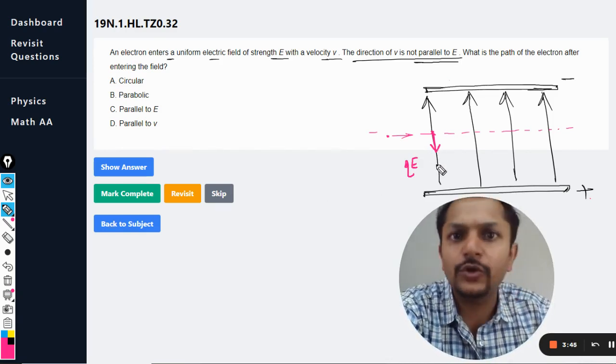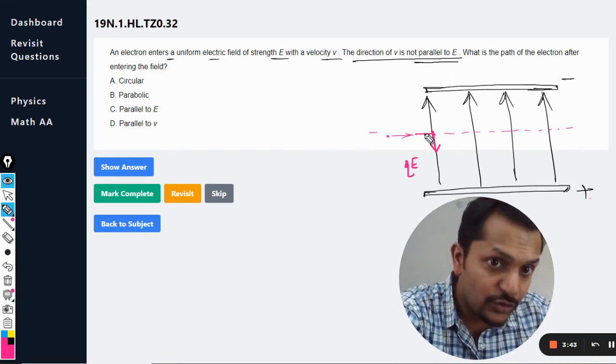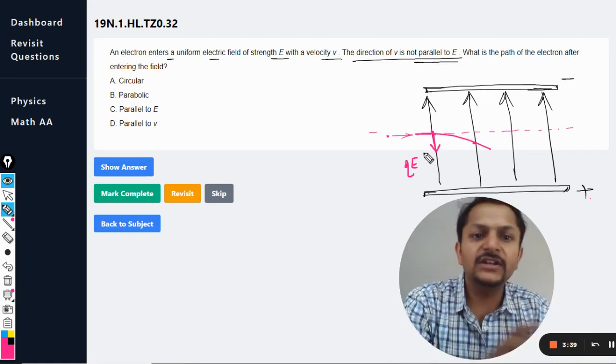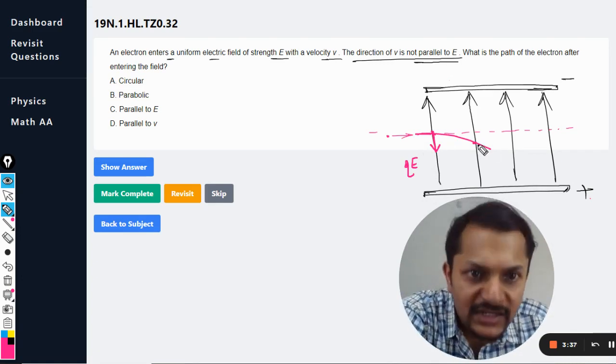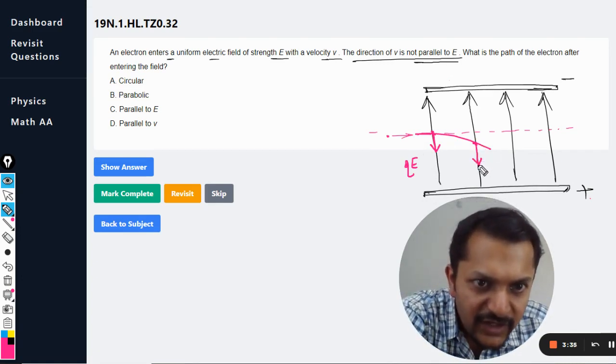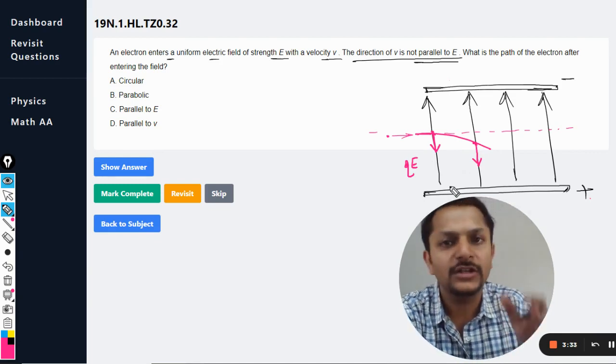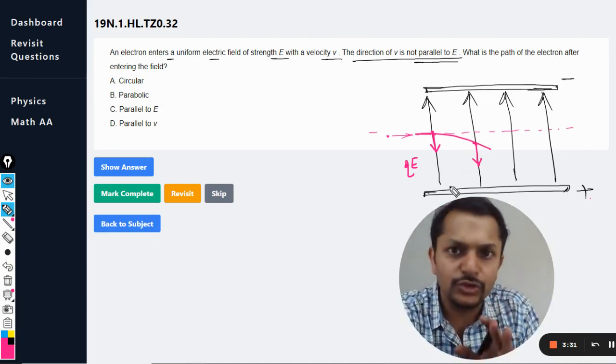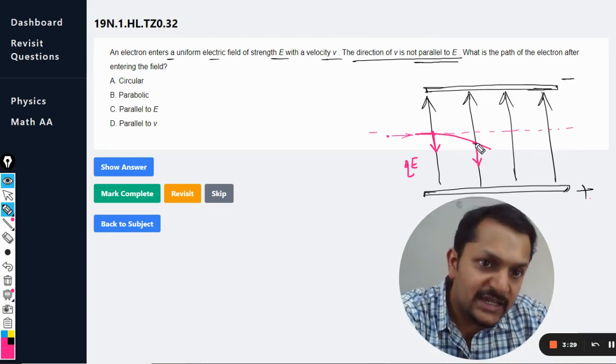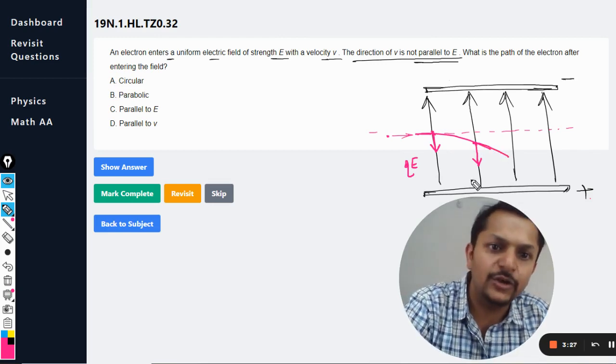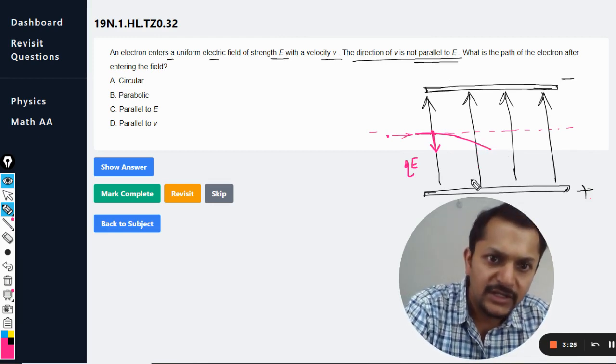Now this force is not going to change direction. Electron first starts moving downwards. Let us say it reaches this point. What is the direction of the force now? Even now, it is downwards. It is not perpendicular to the motion of electron. This is going to be a kind of a parabola here. Let me draw it.